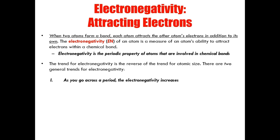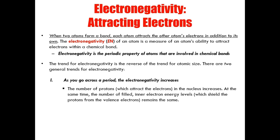There are two general trends for electronegativity. As you go across a period, electronegativity increases. That is, as you go across the period from left to right, the ability of an atom to attract electrons increases. This makes sense when you consider that there is an increase in the number of protons within each atom as you move from left to right on the periodic table, despite having the same number of energy levels. This increase in proton force, or positive force, increases the atom's ability to attract electrons towards the nucleus.